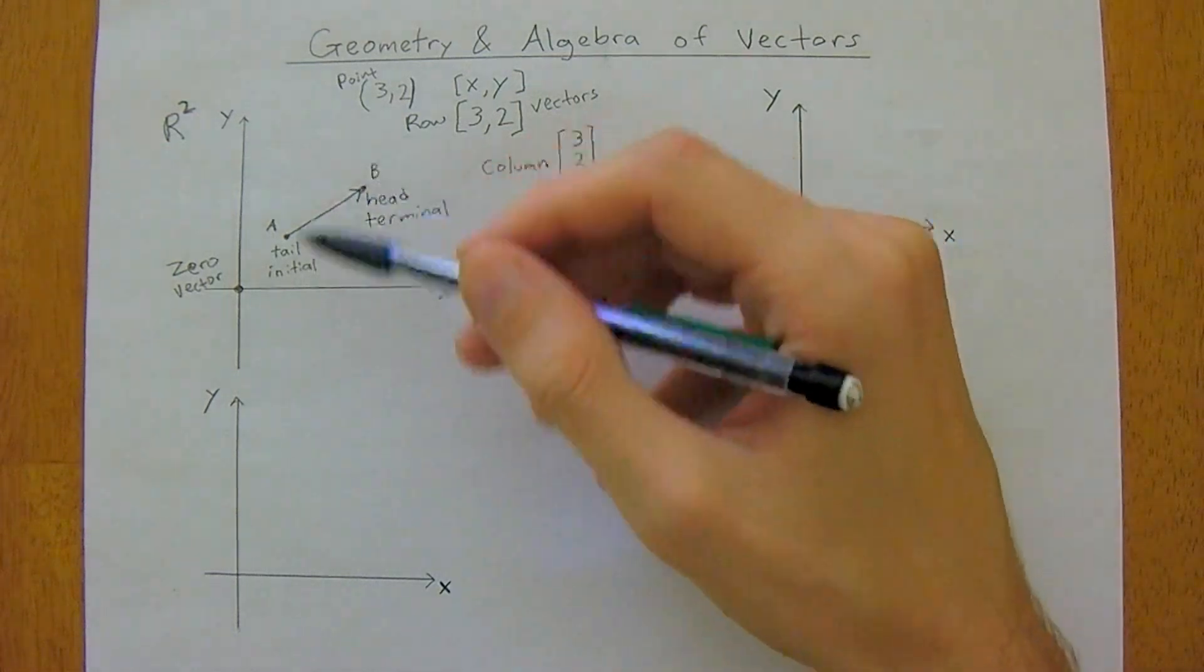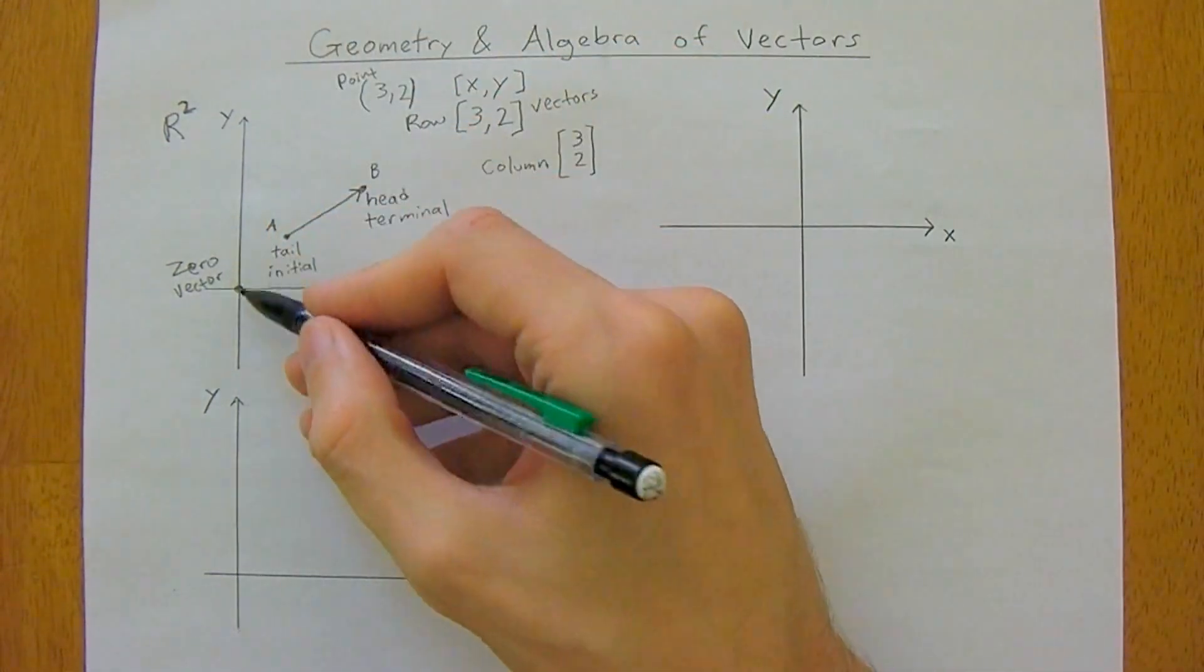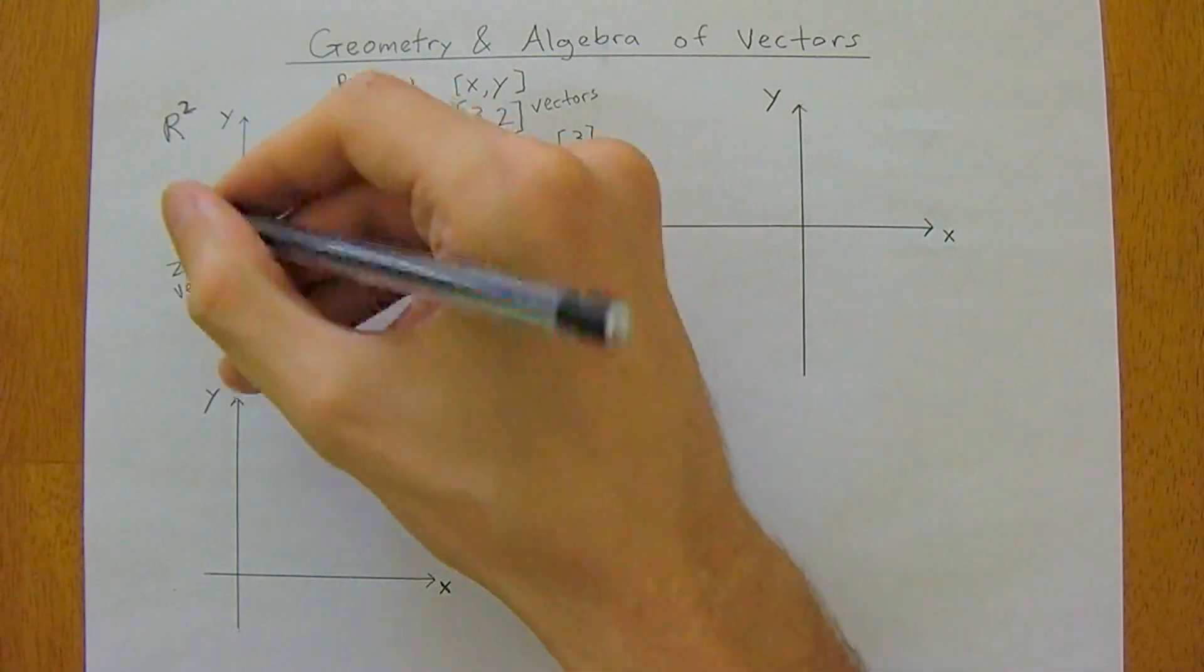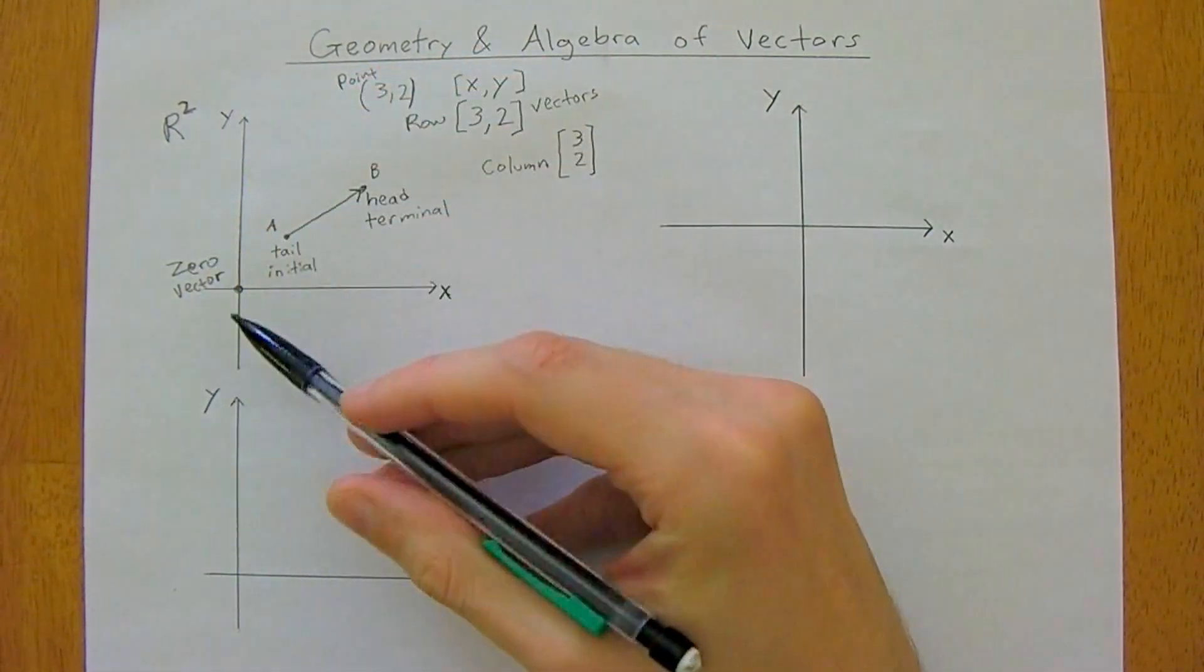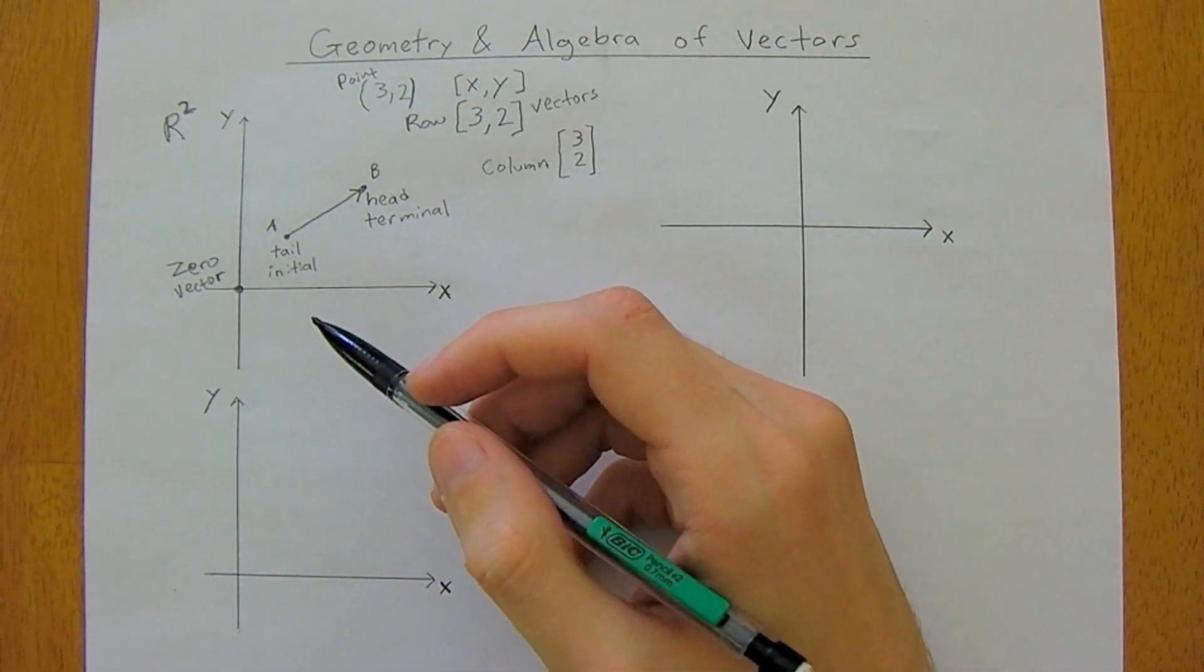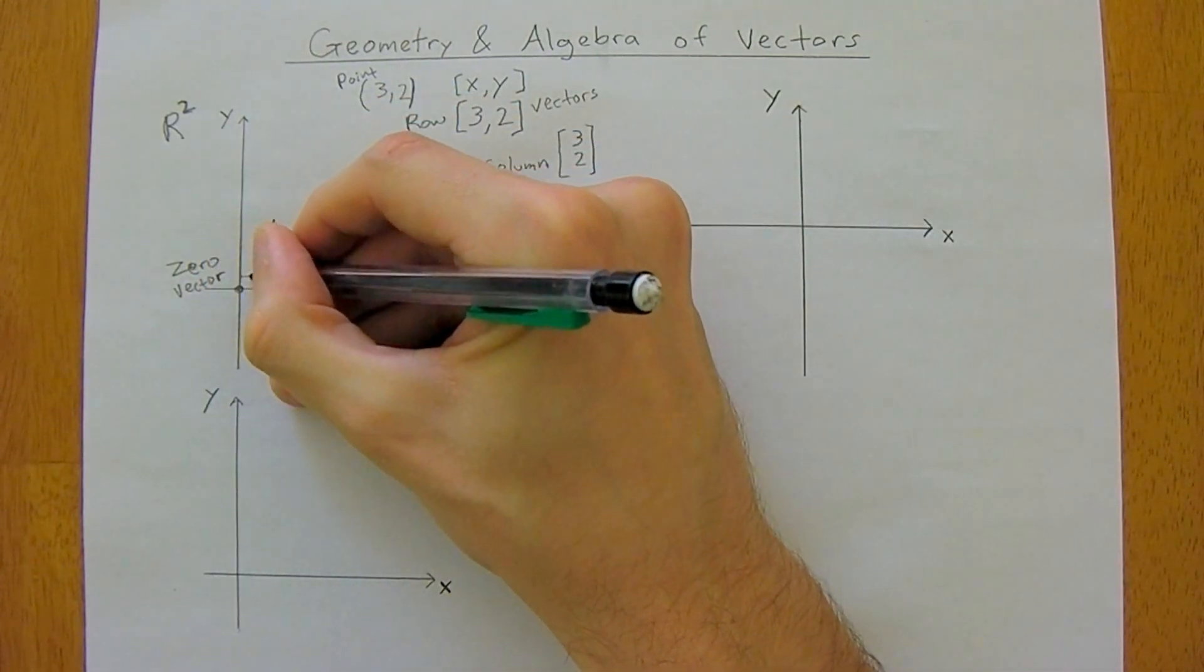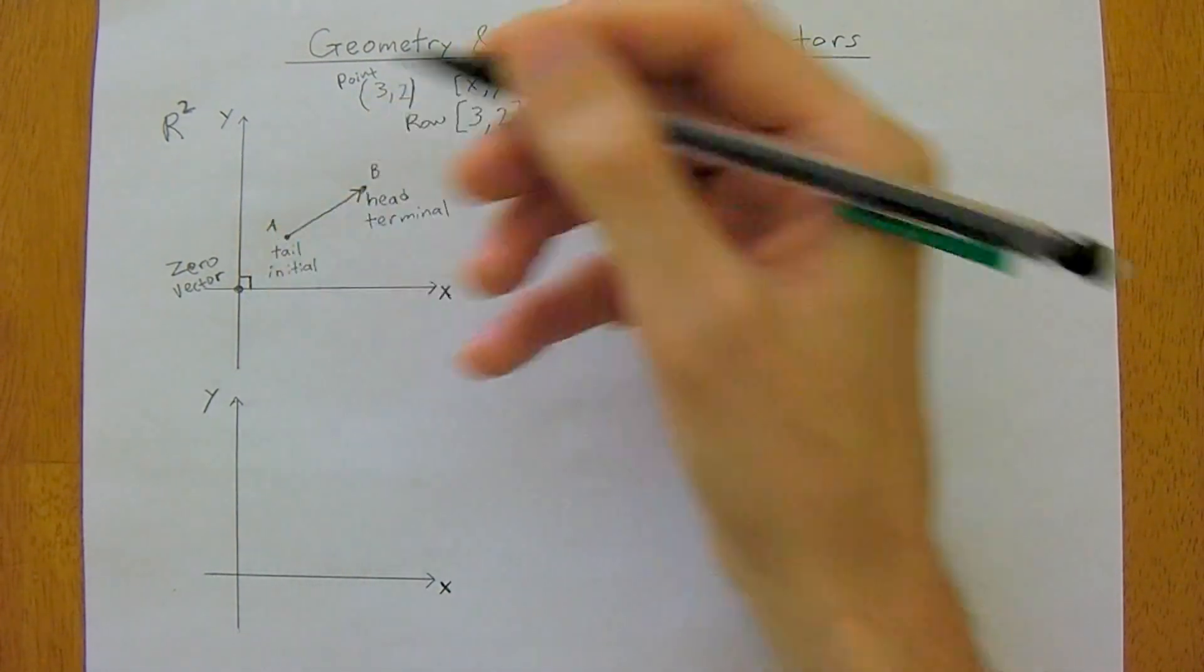If we had an R3 then we'd have a z-axis coming out like this, but we're just going to start off in R2. I used a big term called orthogonal, and orthogonal just means perpendicular to, so at 90 degrees to.